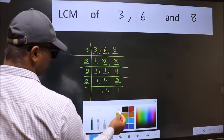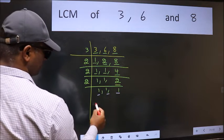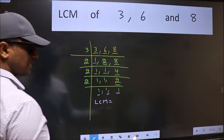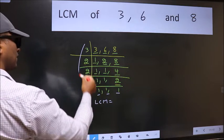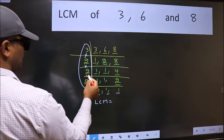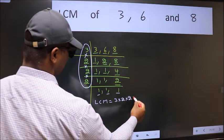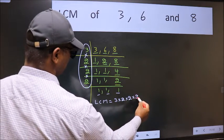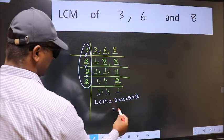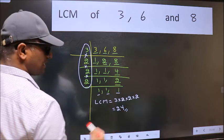So we got 1 in all the 3 places. So our LCM is the product of these numbers — that is 3 into 2 into 2 into 2 into 2. When we multiply these numbers, we get 24. So 24 is our LCM.